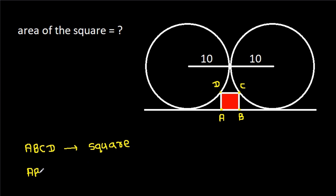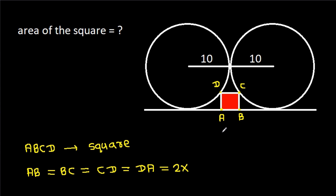So ab = bc = cd = da. Suppose each side is 2x, so ab is 2x and ad is 2x.